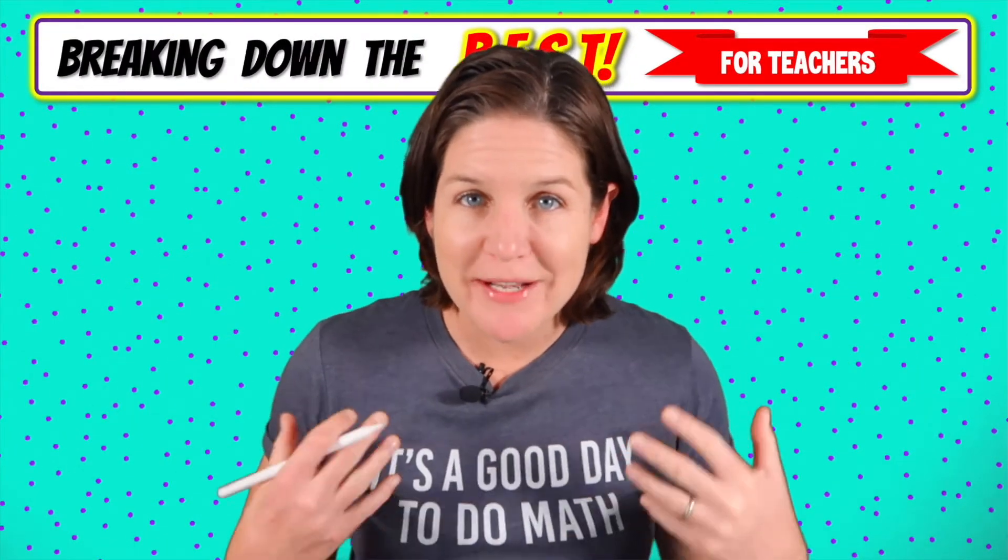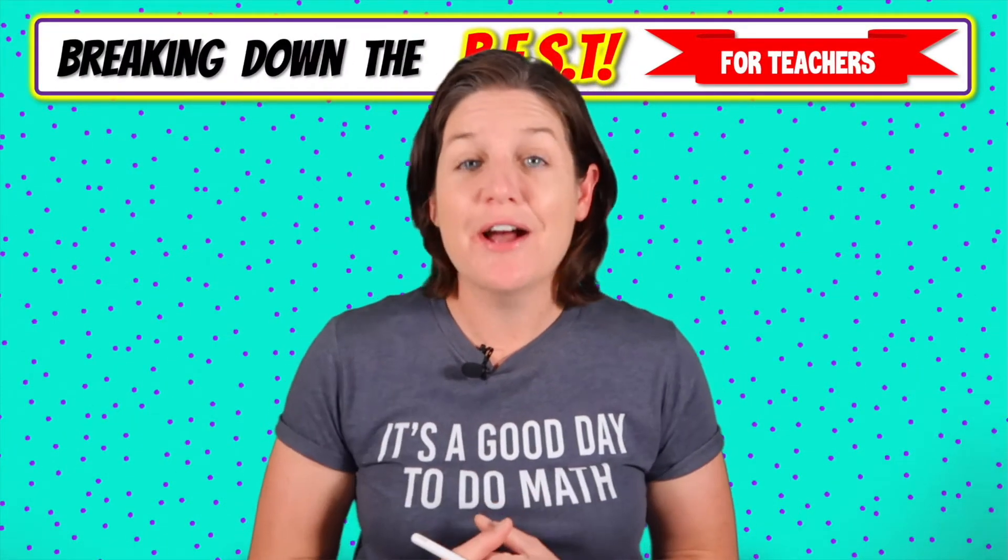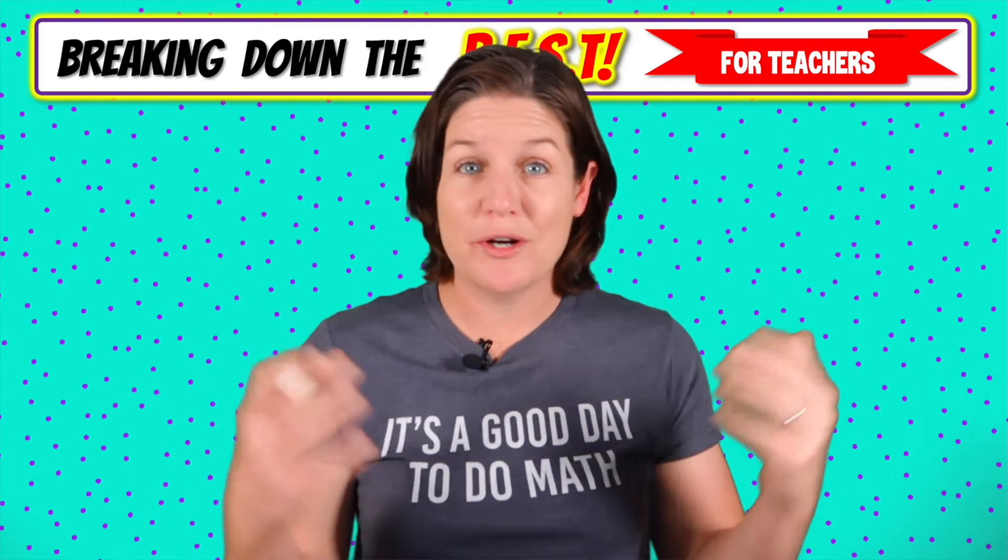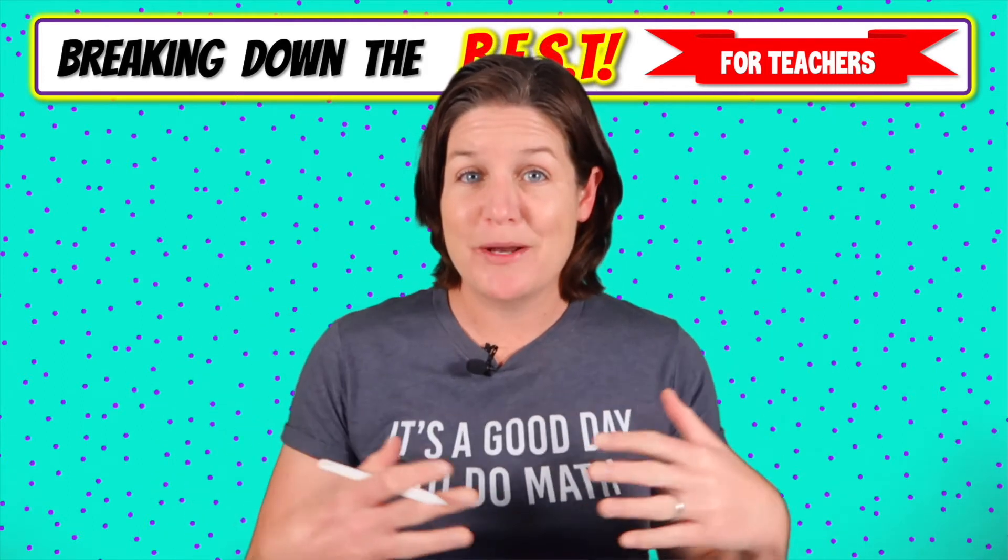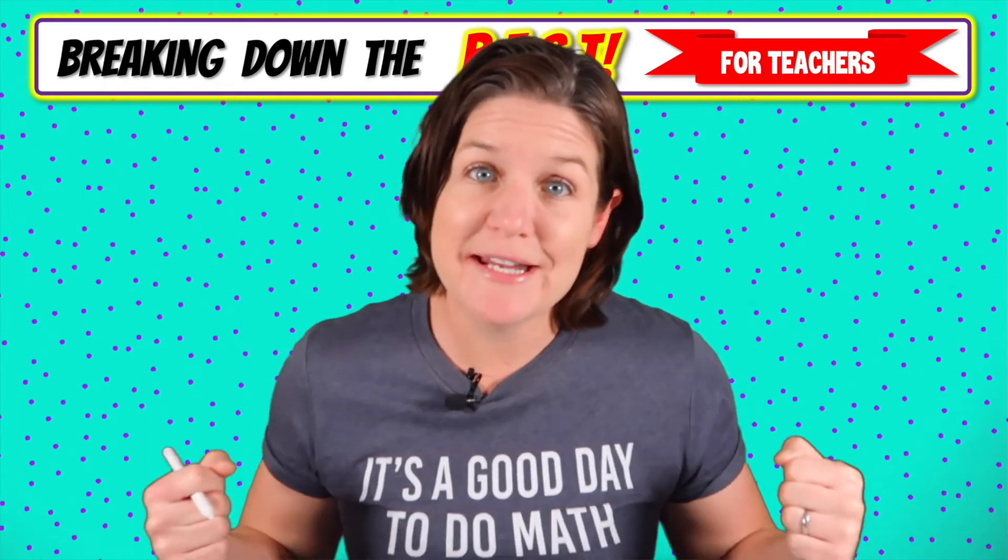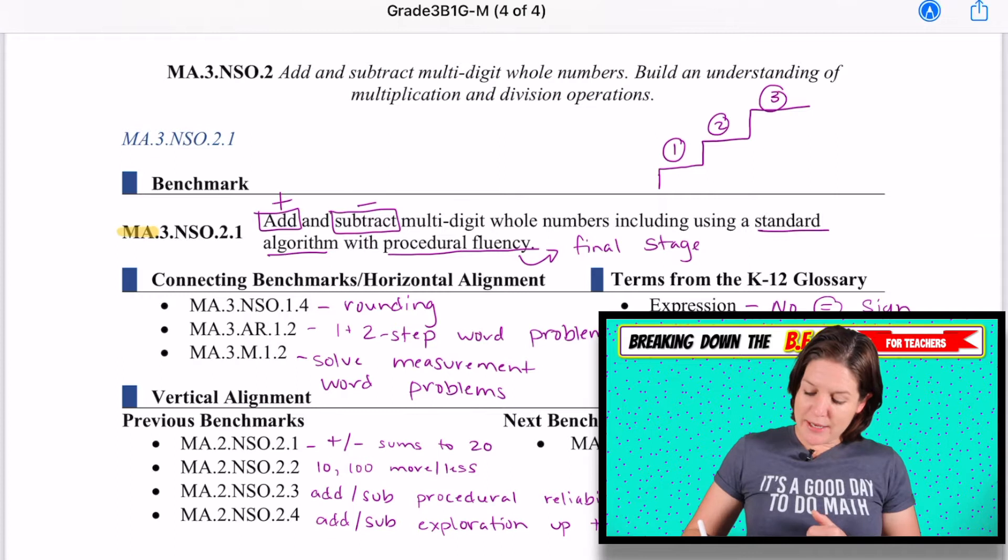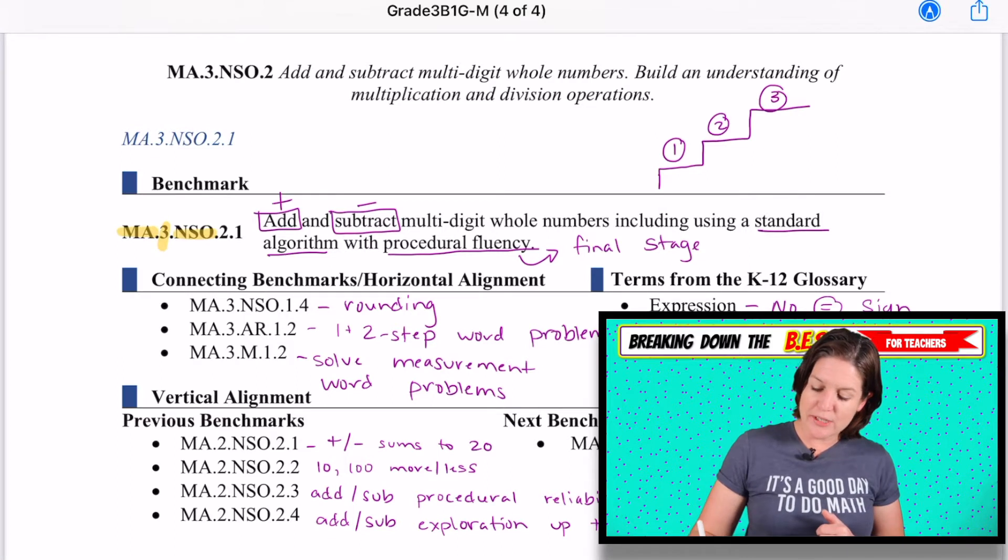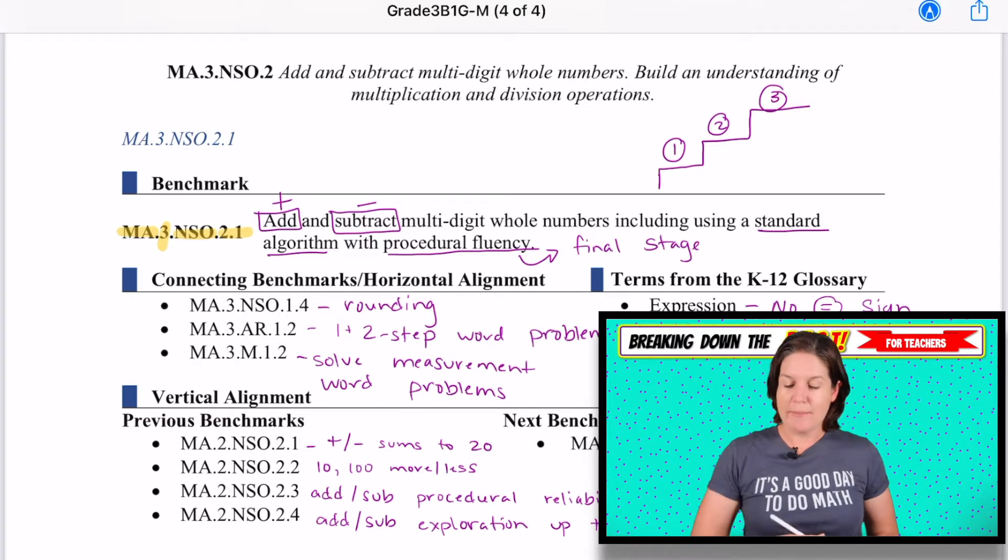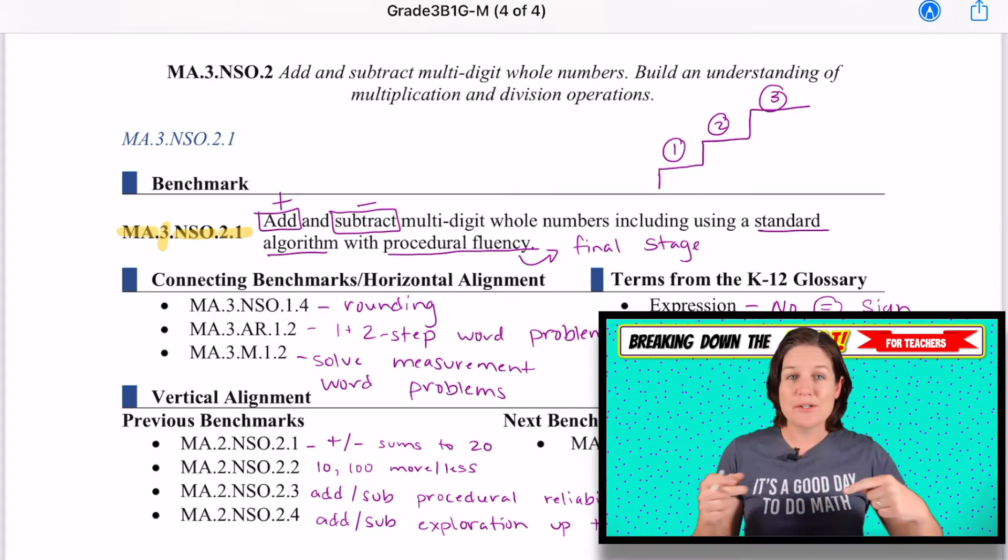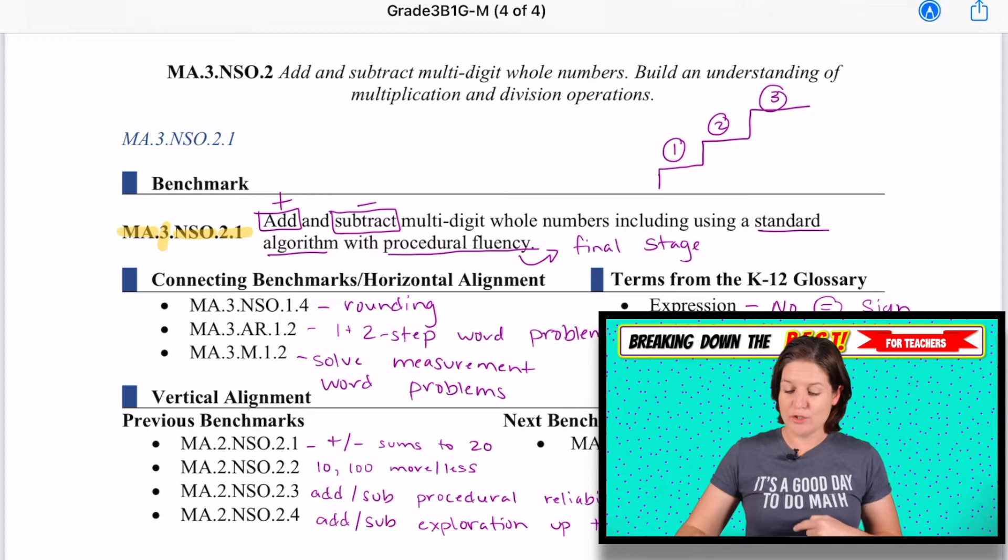Hello, everybody, and welcome. My name is Sarah McCarthy, the creator of McCarthy Math Academy. And I just want to thank you for taking time out of your crazy busy schedule to join me on this episode of Breaking Down the Best, where today we will go over the standard MA.3.NSO.2.1. MA stands for math, 3 for third grade, NSO stands for number sense operations, and then we're on 2.1.